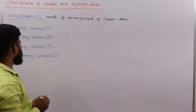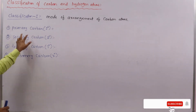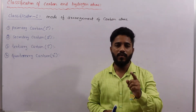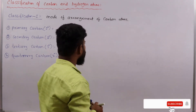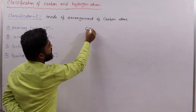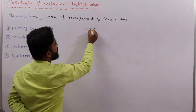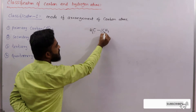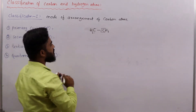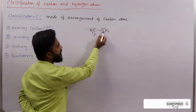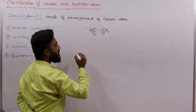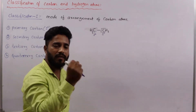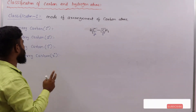So what is primary carbon? The carbon which is bonded to only one other carbon is said to be primary carbon. For example, in the molecule CH3-CH3, if we take this carbon, it is bonded to only one other carbon, so it is said to be primary carbon.